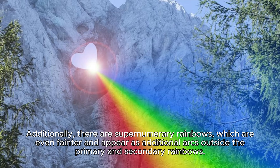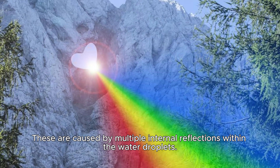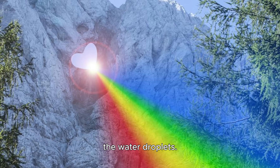Additionally, there are supernumerary rainbows, which are even fainter and appear as additional arcs outside the primary and secondary rainbows. These are caused by multiple internal reflections within the water droplets.